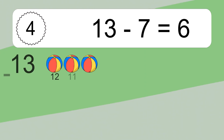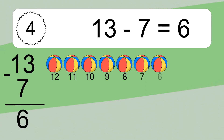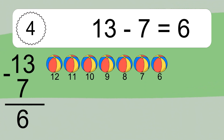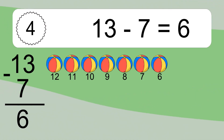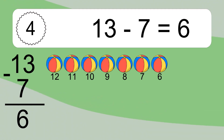13 minus 7 equals what? 13 minus 7 equals 6. Let's count it: 12, 11, 10, 9, 8, 7, 6.